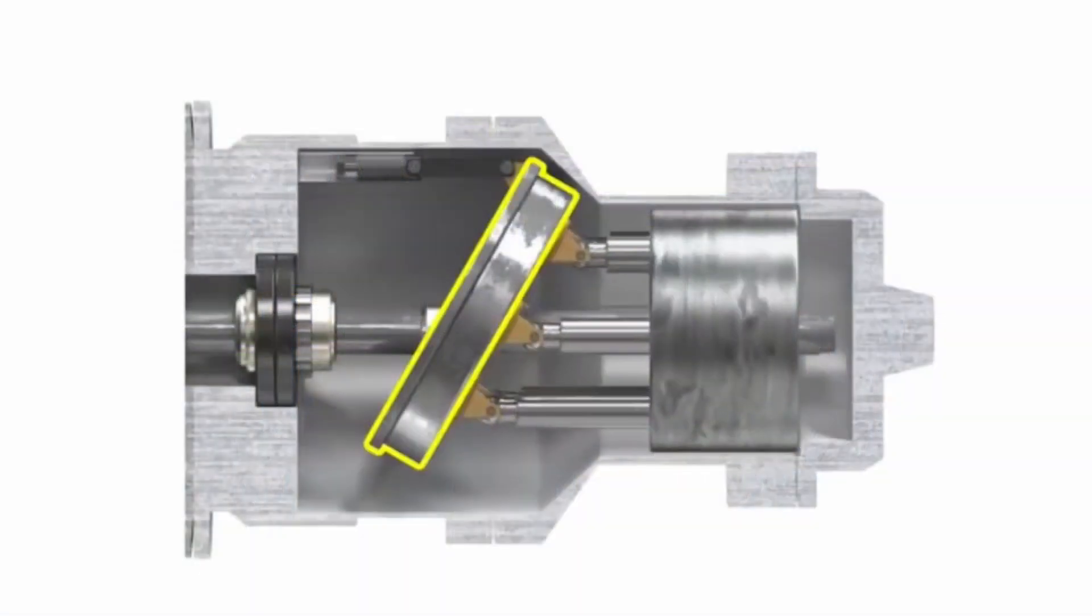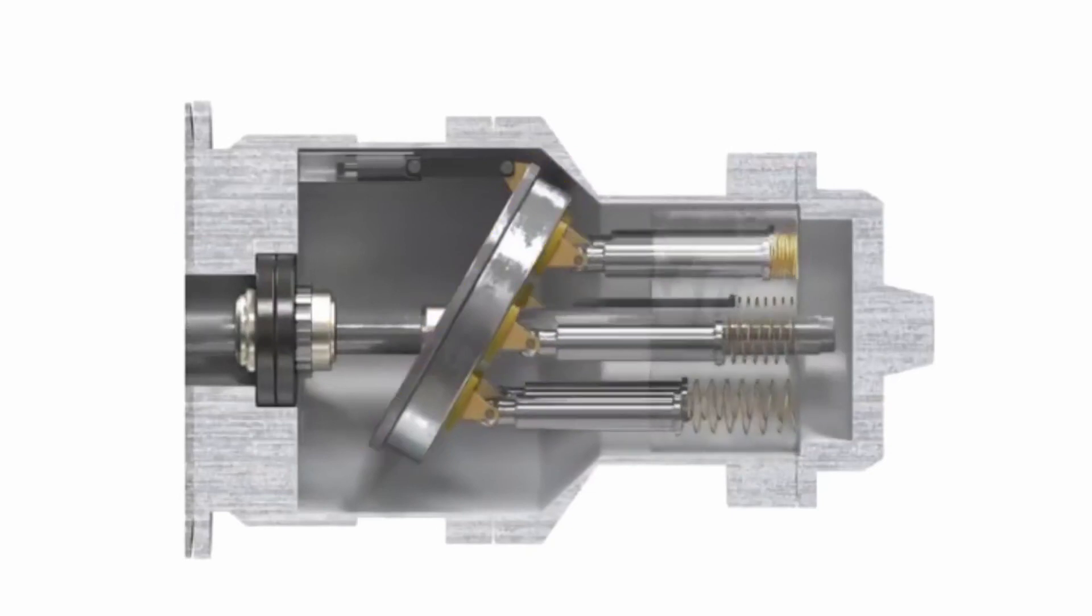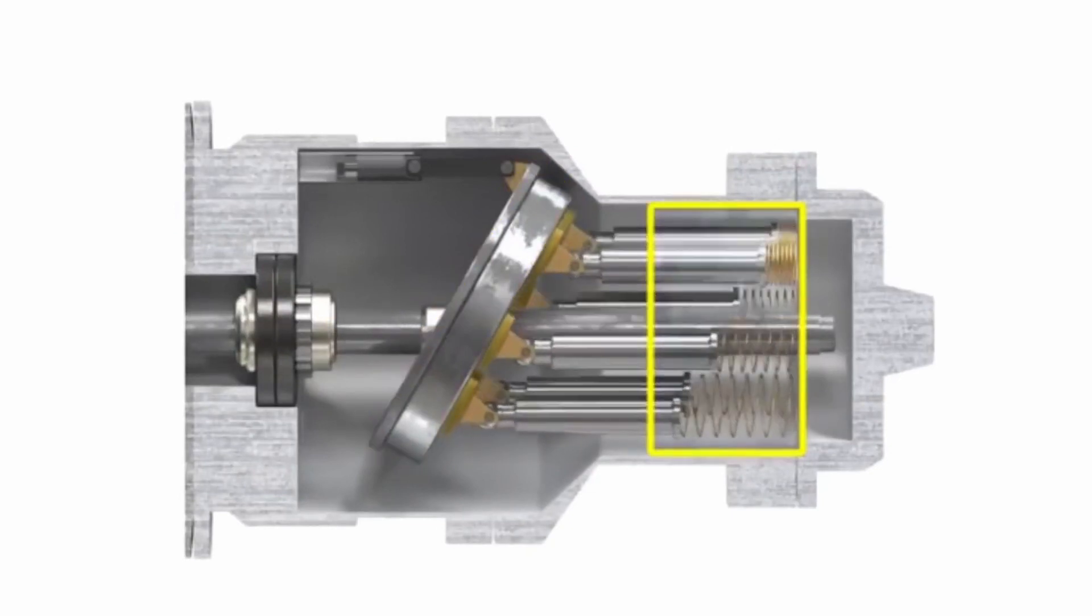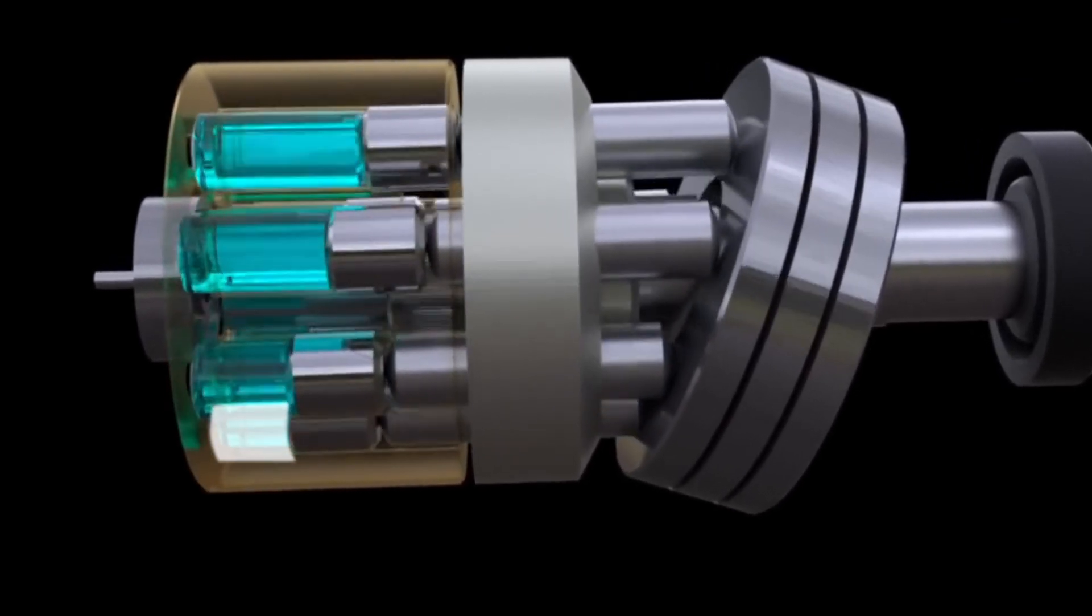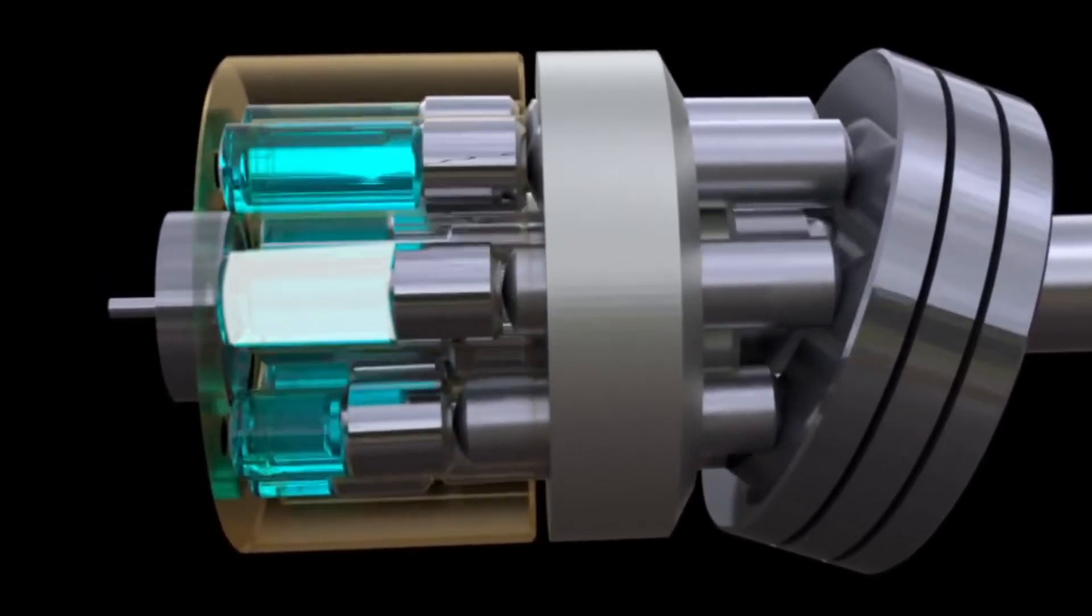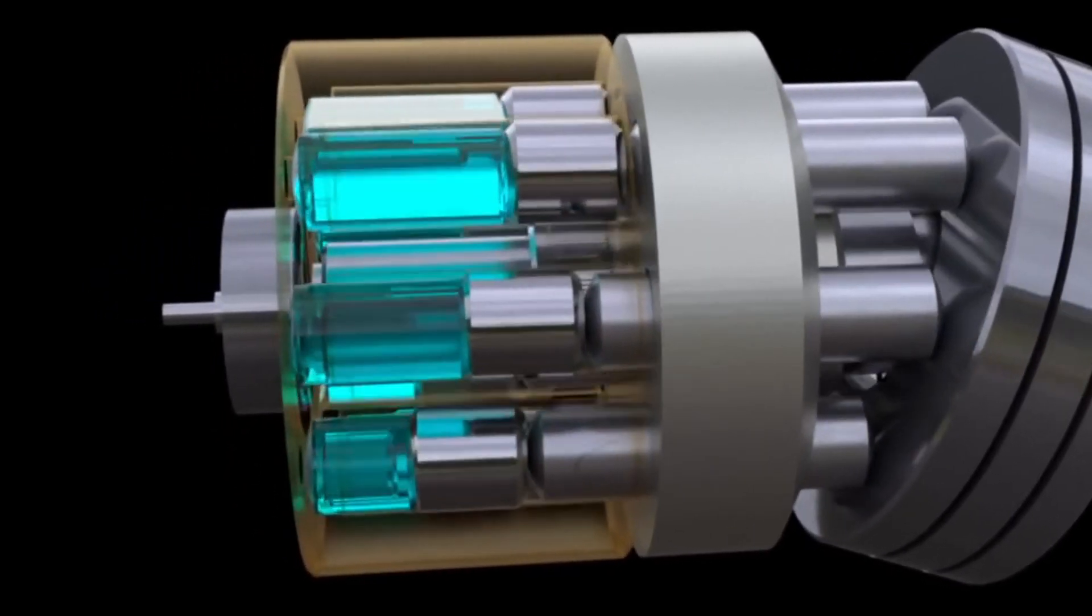As the shaft rotates, the pistons move against the swash plate, causing them to reciprocate within the piston block. Pistons create a vacuum that forces the fluid in during half a revolution and expels fluid during the other half.